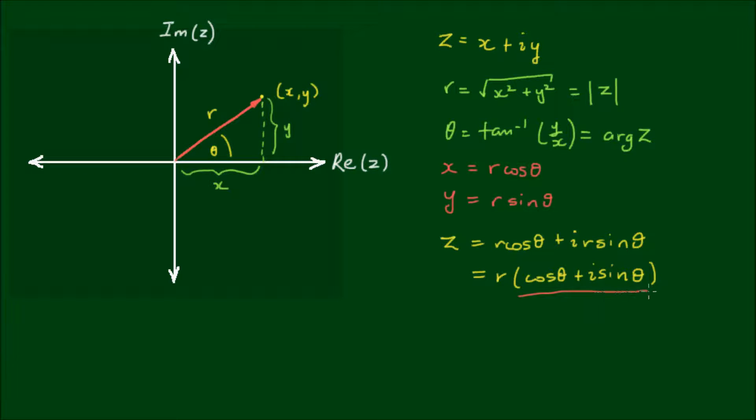And this expression here can be abbreviated to cis or cis θ. So z can be written as z is equal to r cis θ, or you may see it written as mod z cis θ. And this is what we call the polar form of the complex number, or we can also call it the mod argument form.